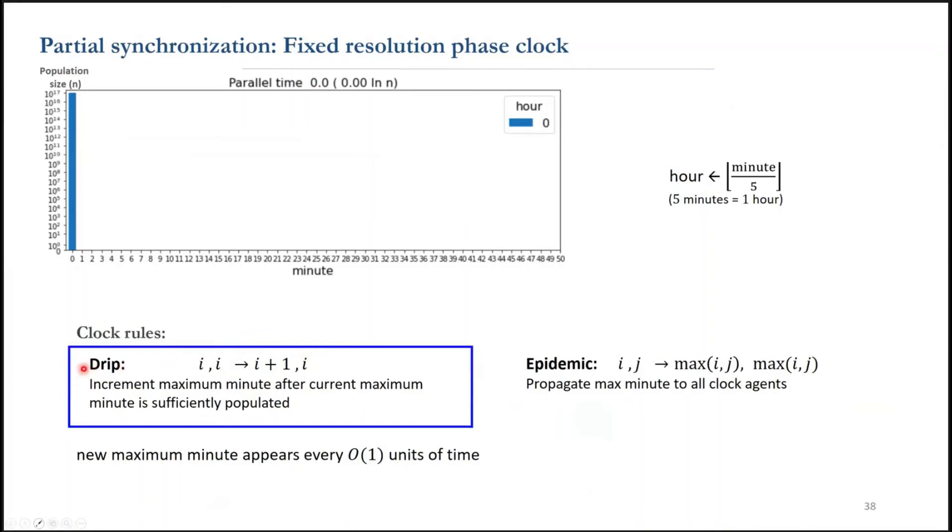So once there are a lot of agents holding the same minute value, a drip happens. Then the agents broadcast a maximum minute by the epidemic rule. A new maximum minute will appear in constant unit of time with these two rules. Because of the dripping reaction, small constant fraction of agents move to the next minute before most agents catch up.